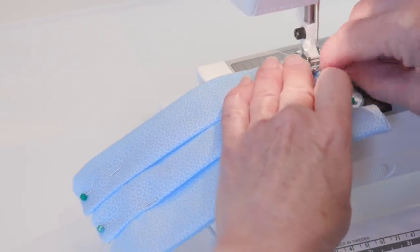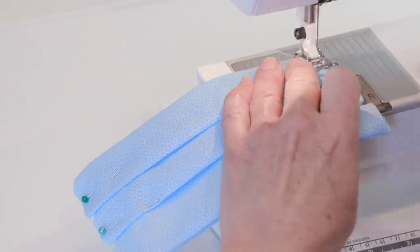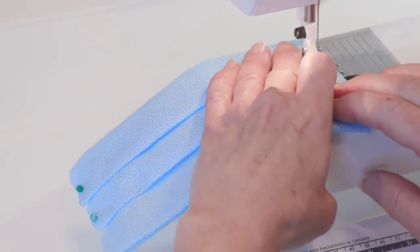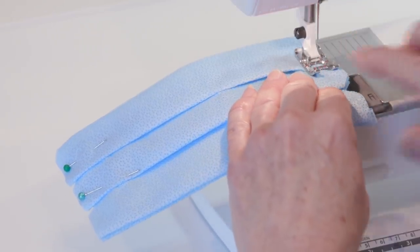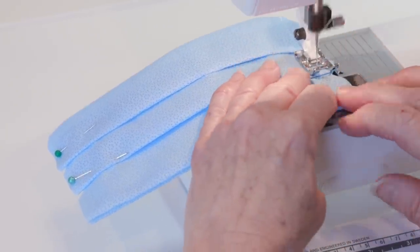To secure the pleats for fabric ties, first sew a seam down each side of the mask just inside the notched edges. The seam will be approximately a quarter inch from the edge.